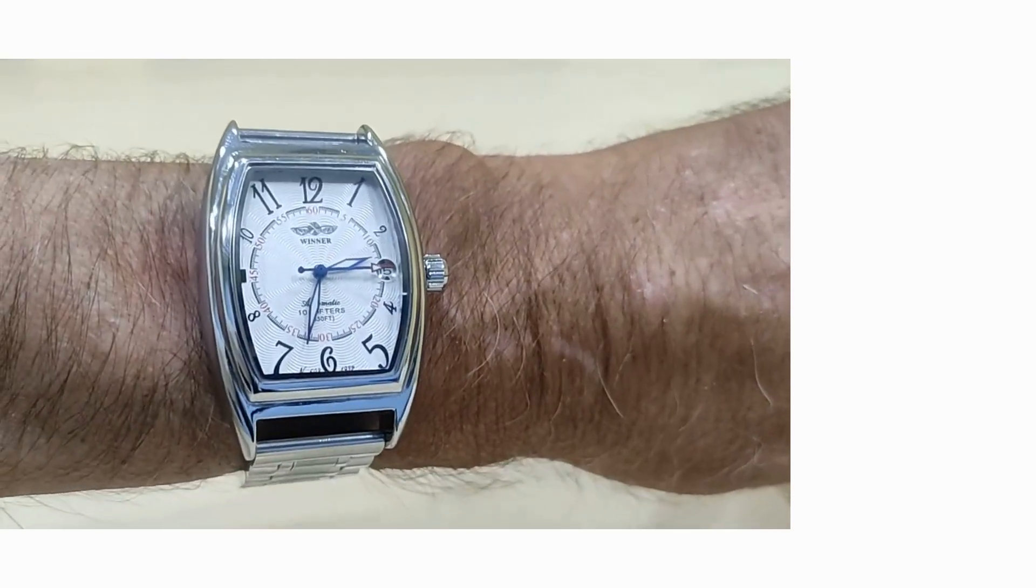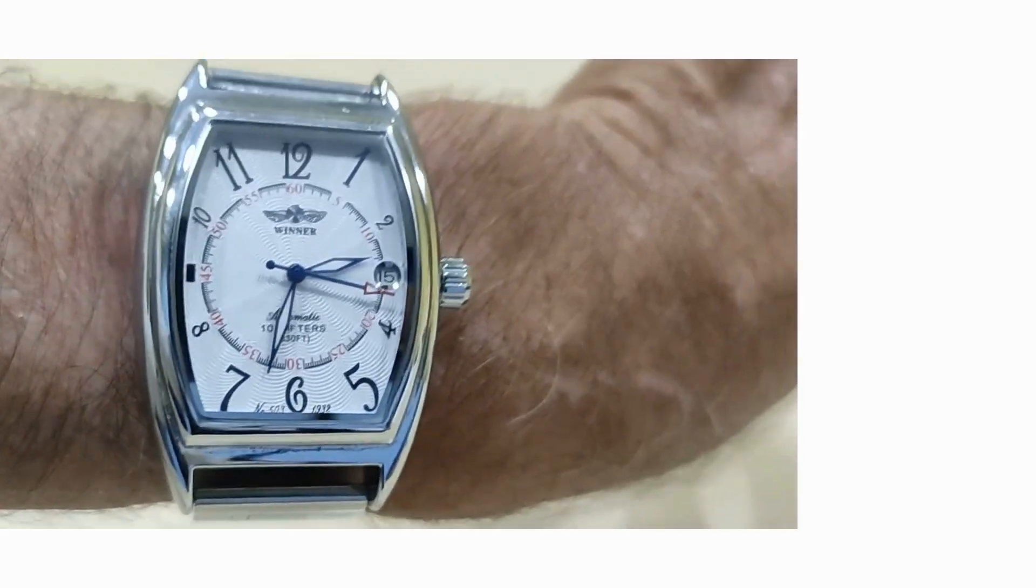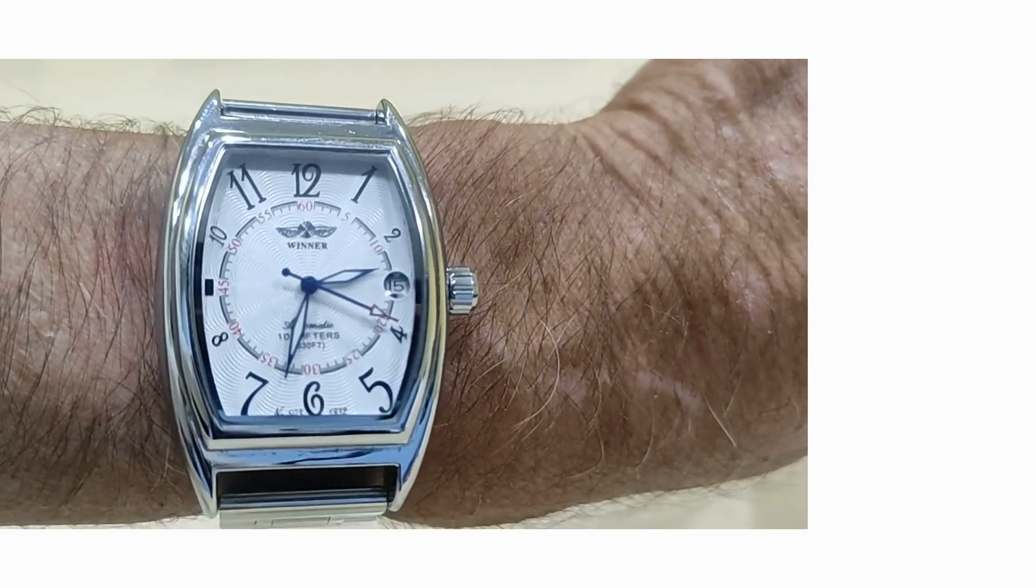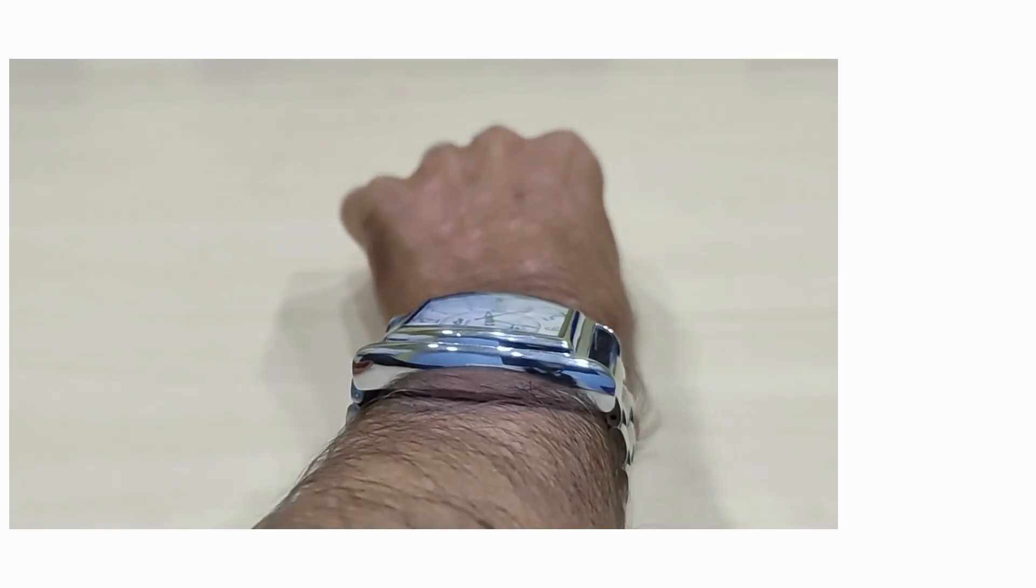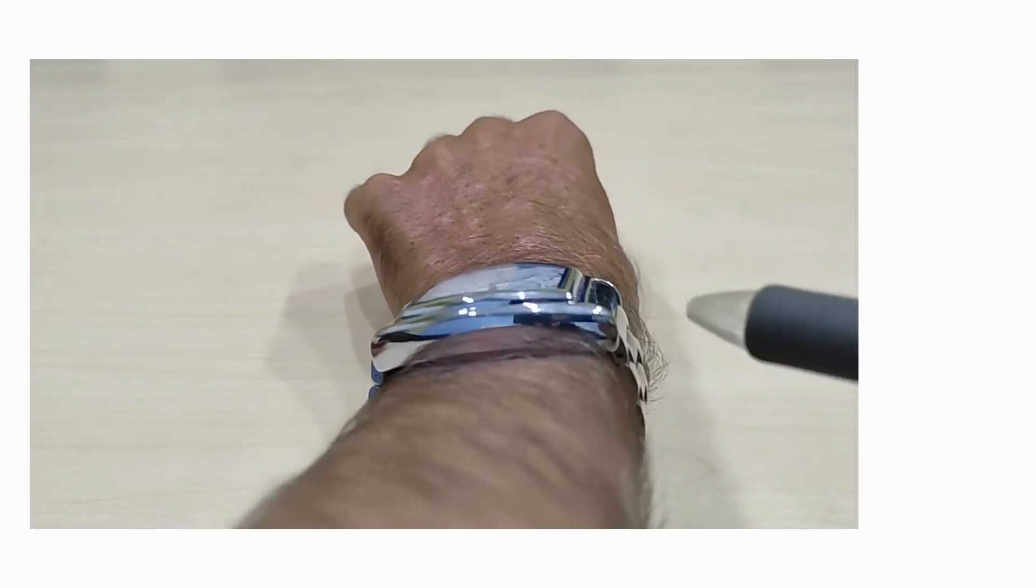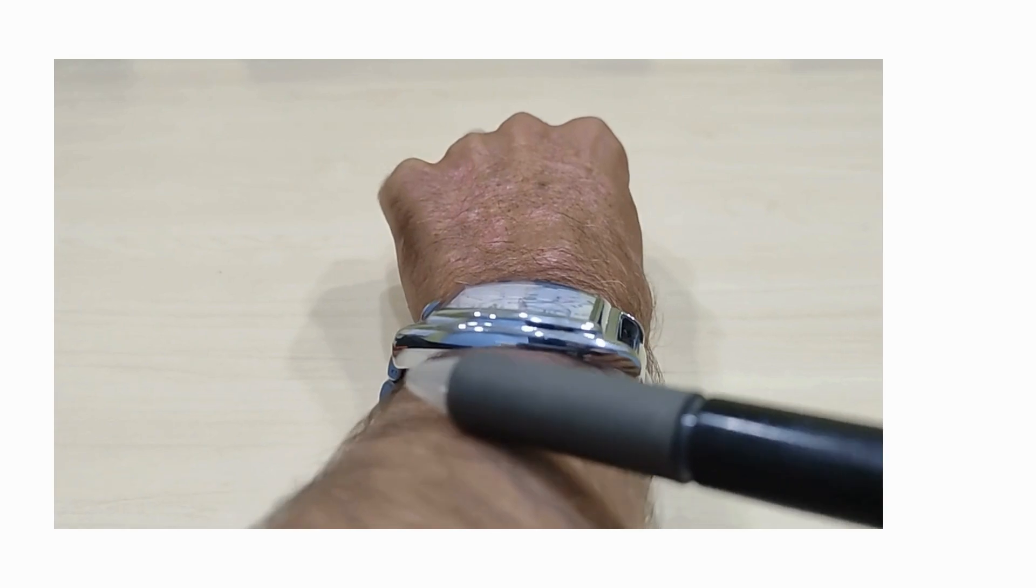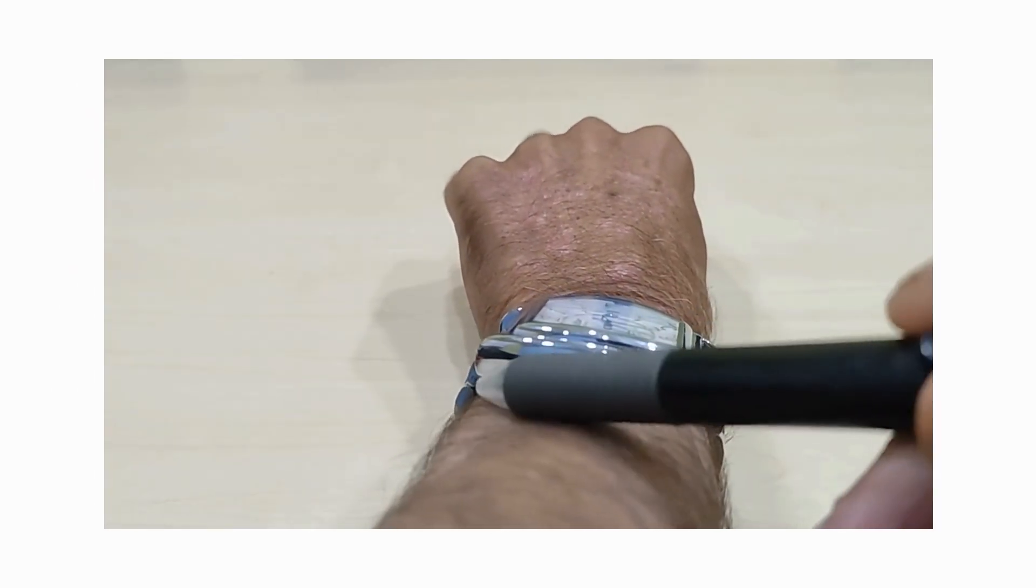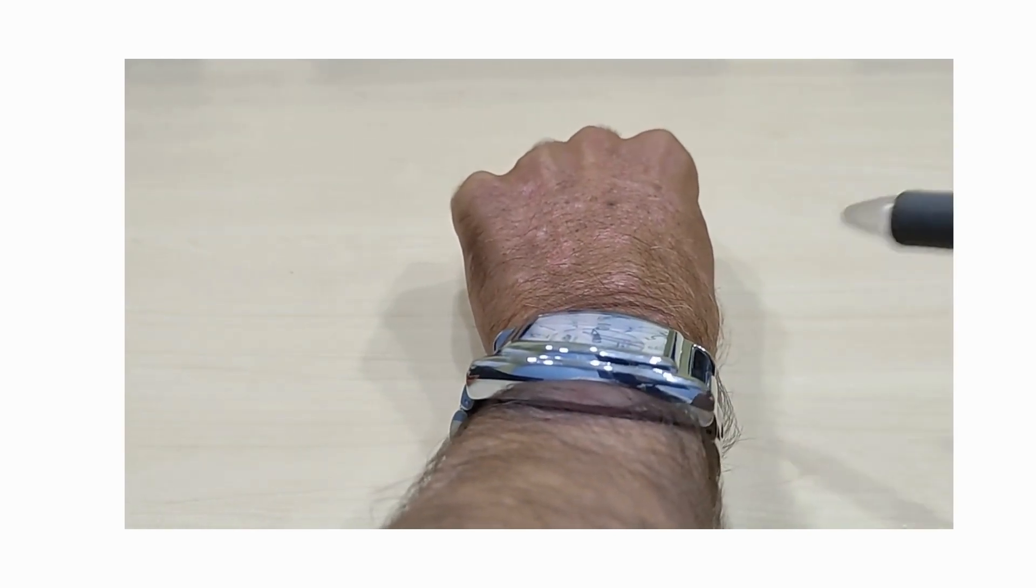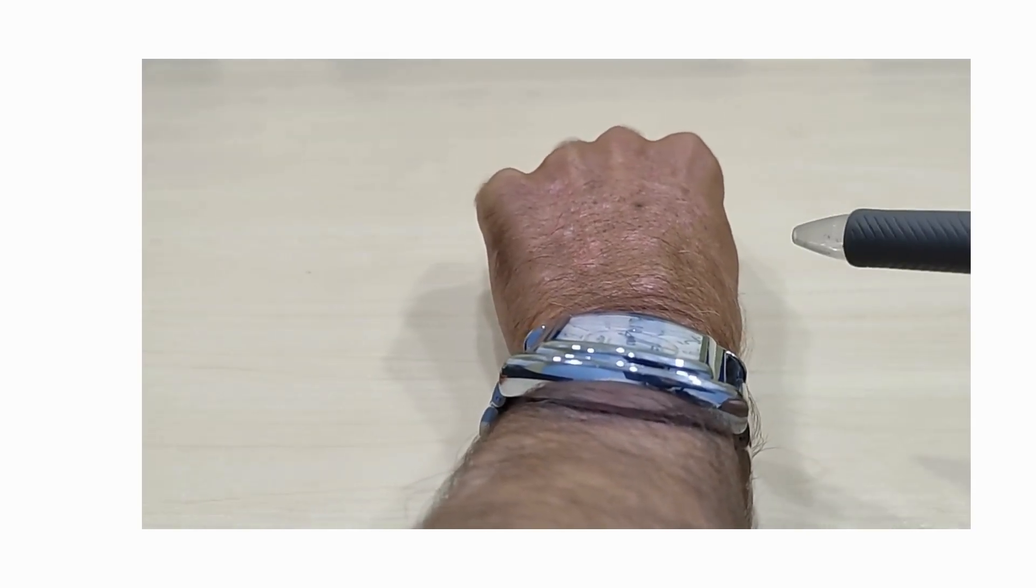So here we have it on the wrist. It doesn't look too bad from overhead, but it's when you get the profile. One thing I should say is that, as I mentioned earlier, despite being 52 millimeters from lug to lug, you don't get any overhang even on my wrist, which is actually six and a half inches, quite a slim wrist.